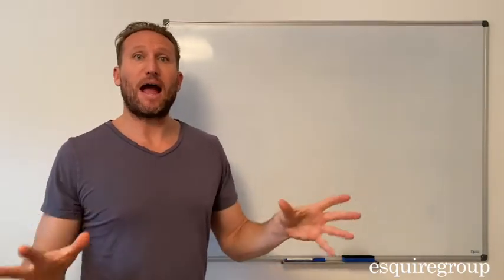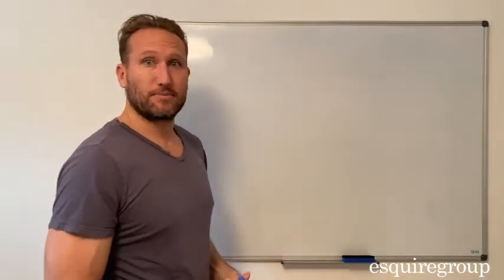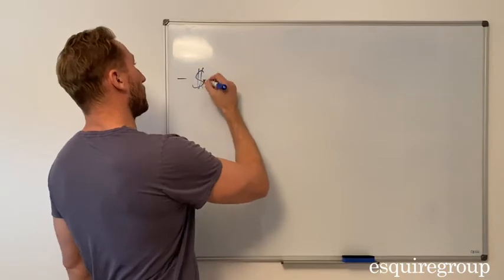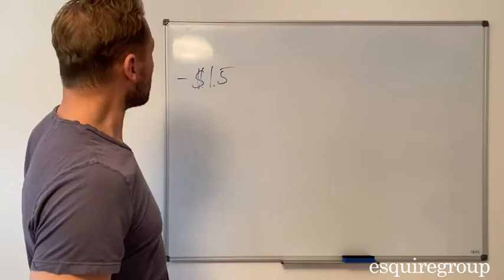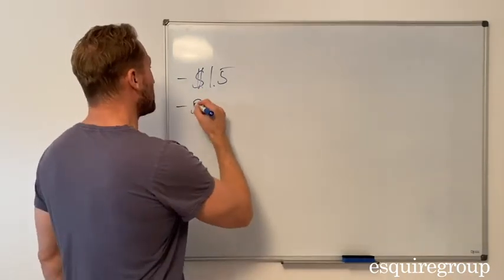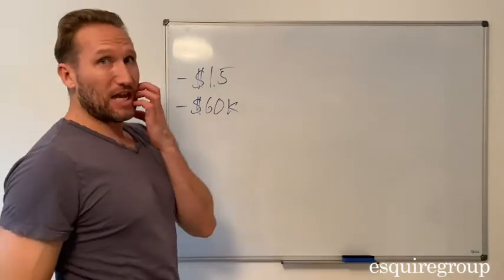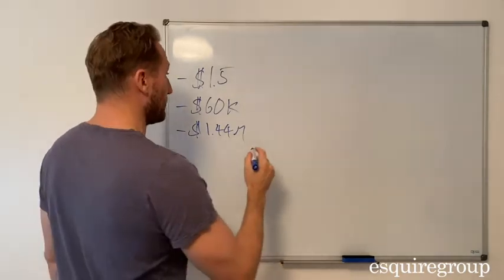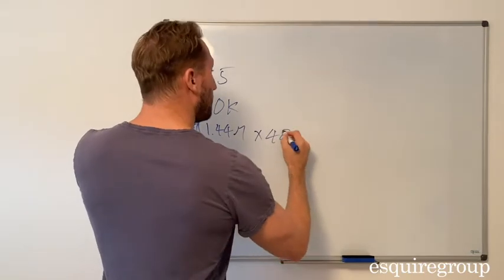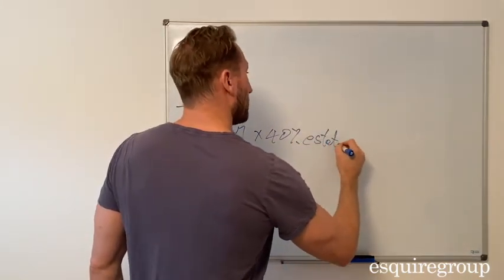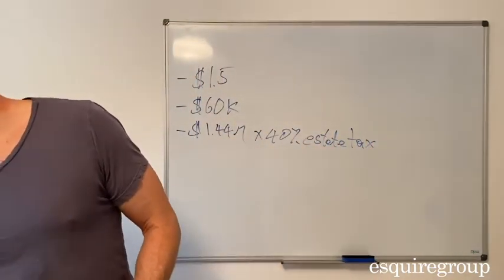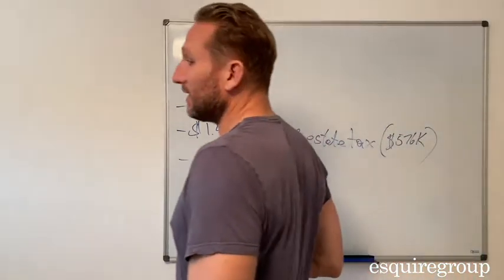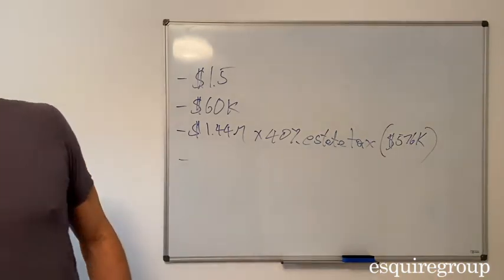So, I'm going to give you an example of how this works. Let's assume for a second that Jesus has a portfolio of U.S. stocks worth $1.5 million when he dies. The U.S. is going to give him a $60,000 estate tax exclusion. So, that means $1.44 million is going to be subject to 40% estate tax. Now, so I don't have to do the math in my head, I actually wrote this down. So, that equals $576,000 in the U.S. estate tax, leaving Jesus' heirs with $924,000.